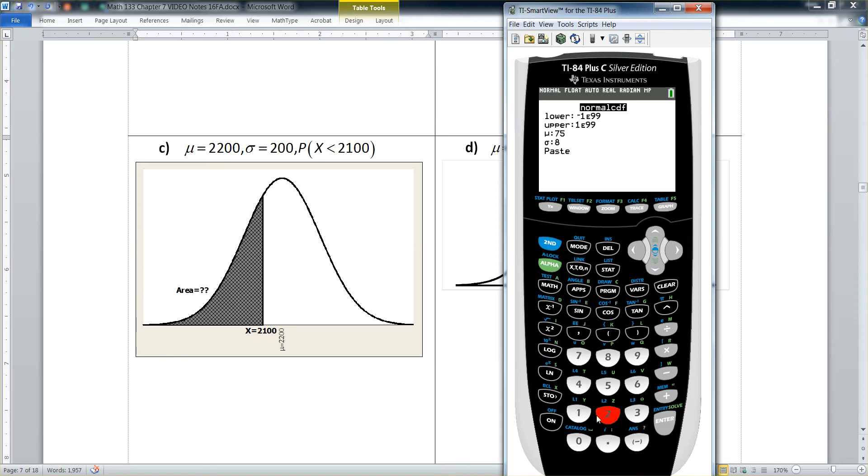That's what note number three says on that decision matrix, which you should have stapled and out next to you at all times from this point on to the end of the course. Right. And then you tell it 2100. And then you tell it the mean is 2200. And you tell it the sigma is 200. Enter. Paste. And then you have to enter it again. Right. So paste, paste it into the calculator's main screen, but then you have to press enter to run it.